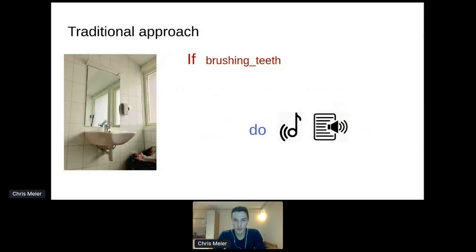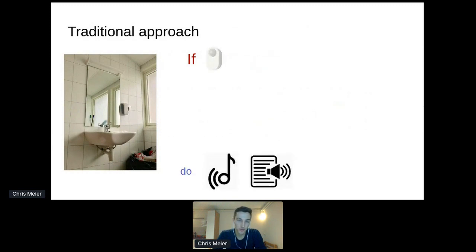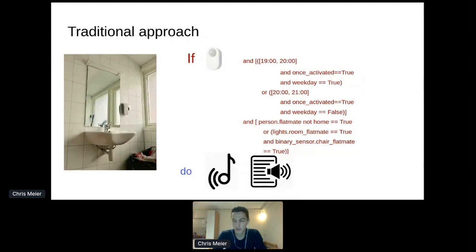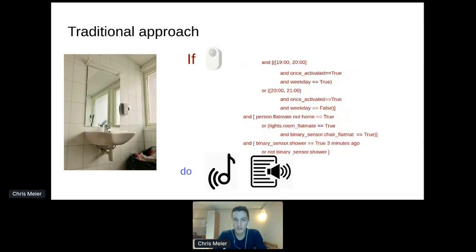So how would I traditionally approach this? For example, if you want the automation when I'm brushing my teeth, Home Assistant should play my favorite song and after maybe three minutes say congratulations, you're finished. Well, I would first install a motion sensor in my bathroom, then define the time I'm most likely to perform this activity. It should only trigger once. Maybe I have a difference between weekdays in contrast to weekends, and we also have to account for flatmates that don't share this habit of playing songs during brushing teeth.